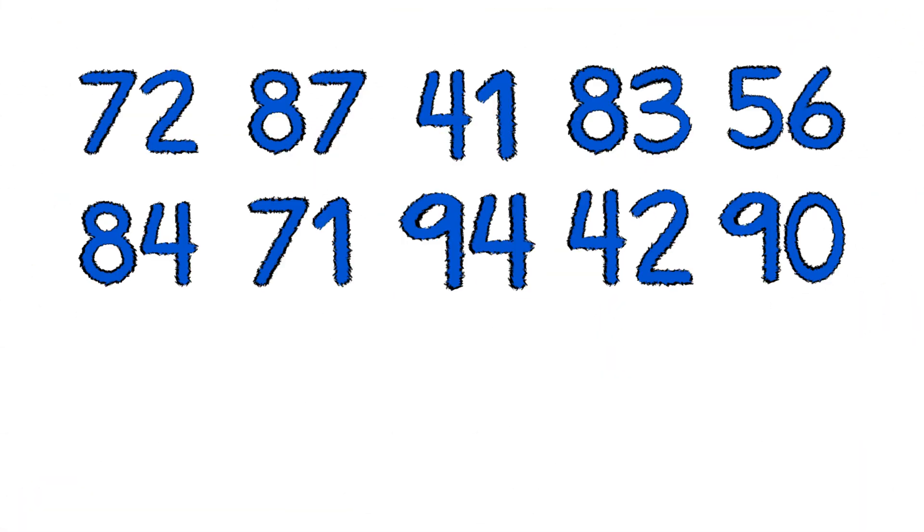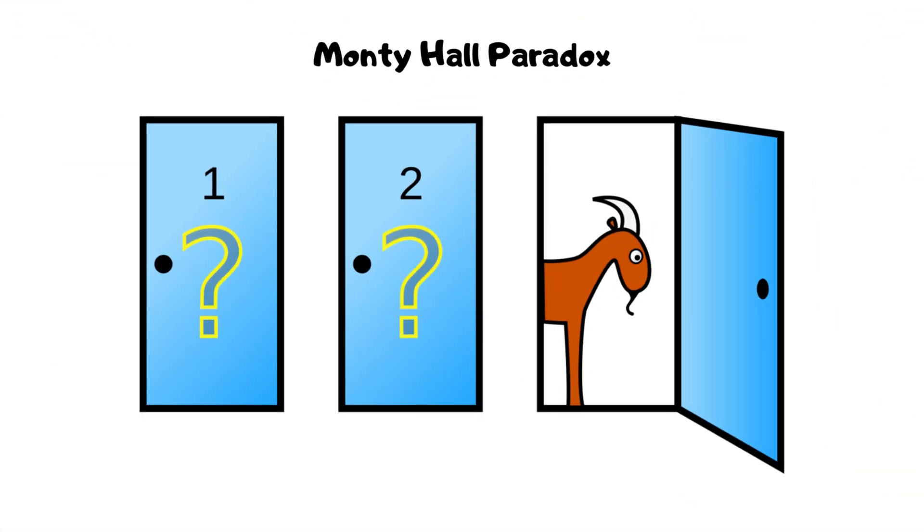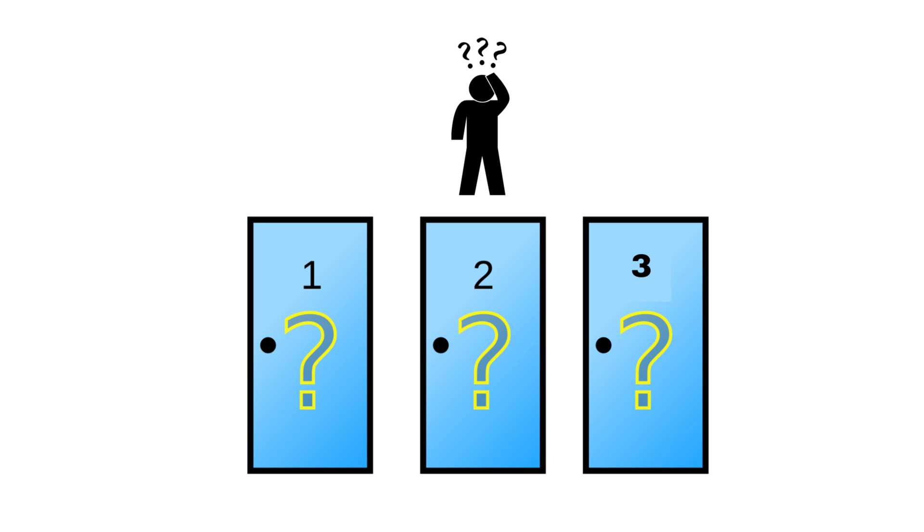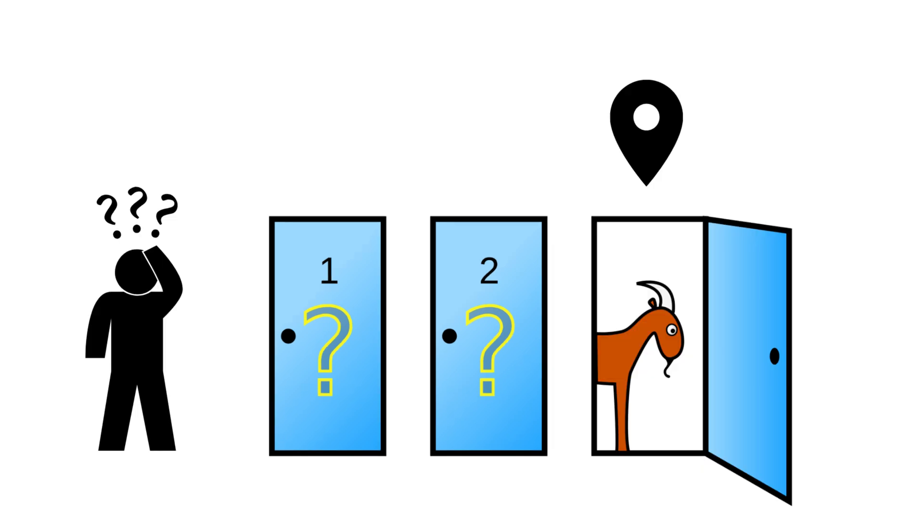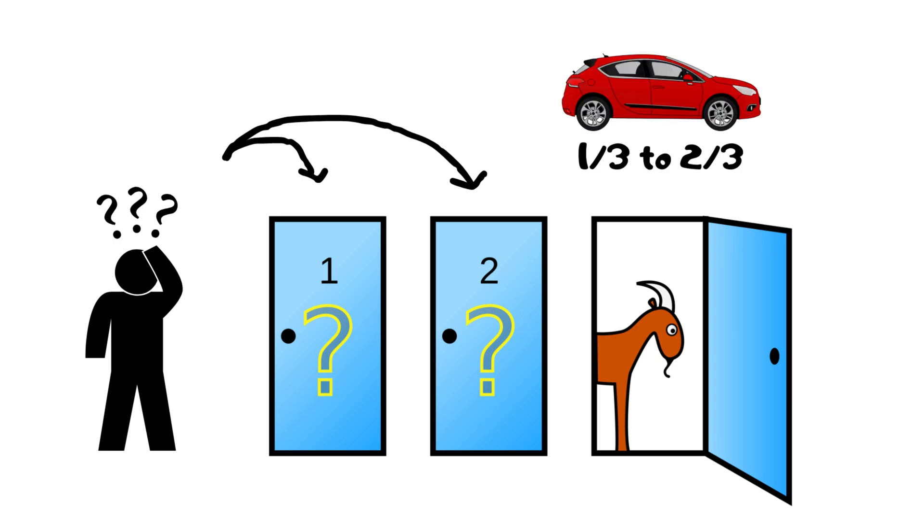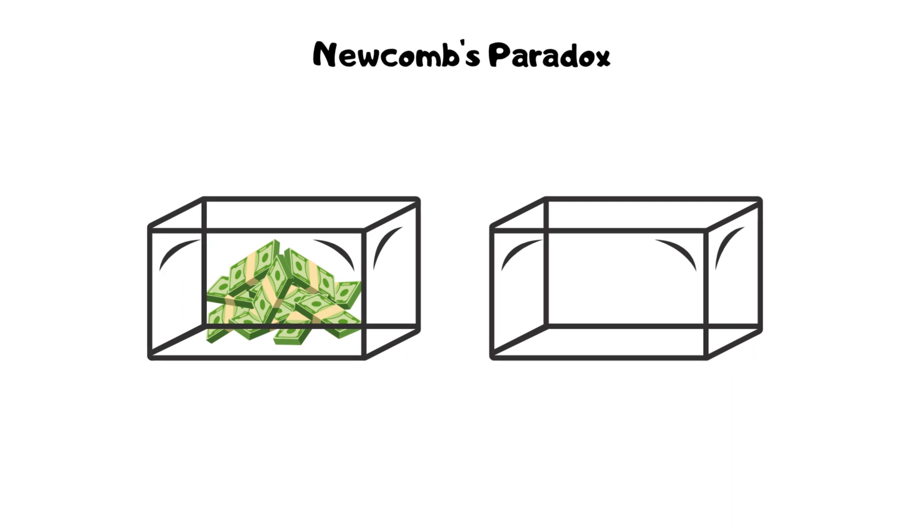Interesting number paradox. Every number is interesting because the smallest uninteresting number automatically becomes interesting. Monty Hall paradox. You choose one of three doors, and after a host reveals a goat behind one of the other doors, switching doors increases your chance of winning the car from one-third to two-thirds.